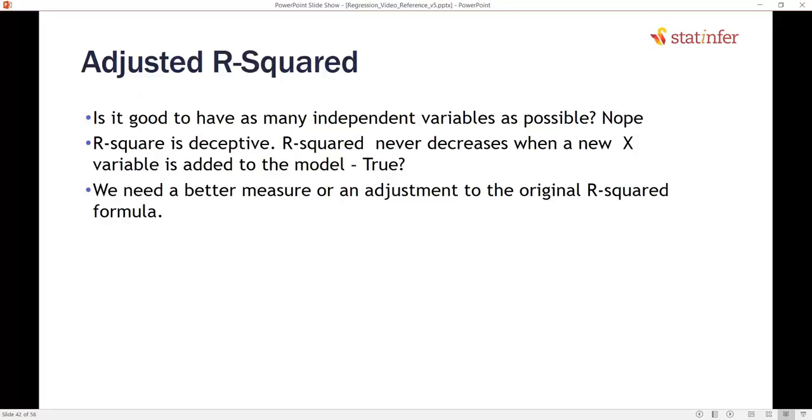Even if you add junk variables, like number of newspapers sold or any variable, if you just simply add any random number variable and try to add it to the model, R-square value will never reduce. It will be either staying at the same point or slightly will increase.